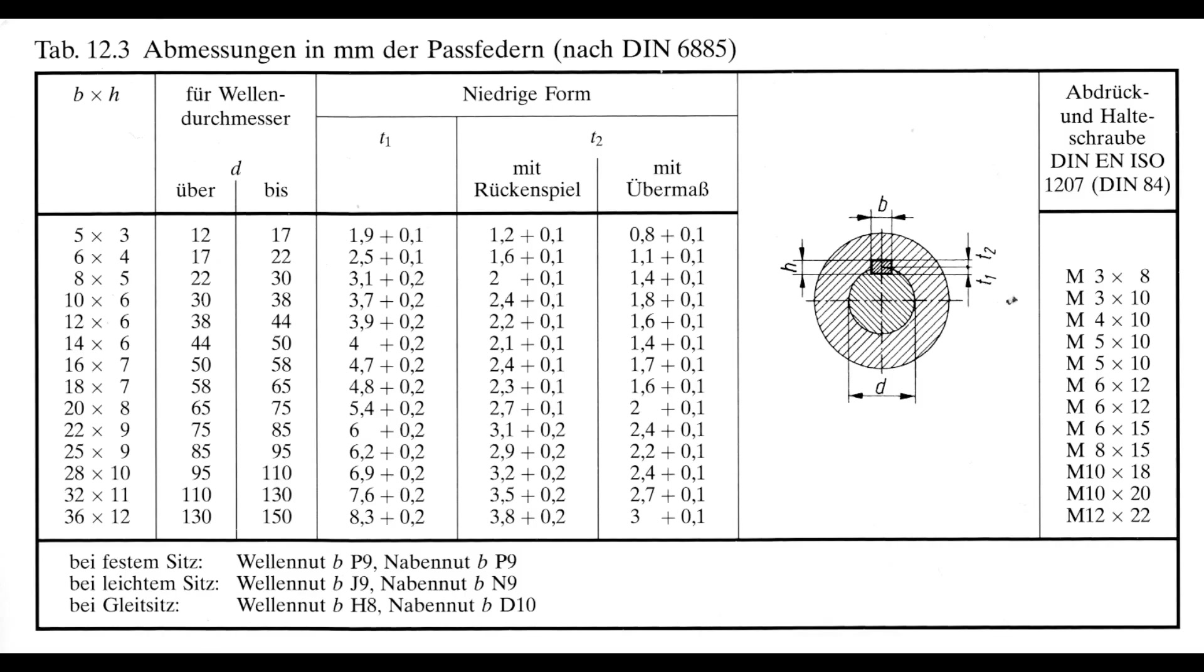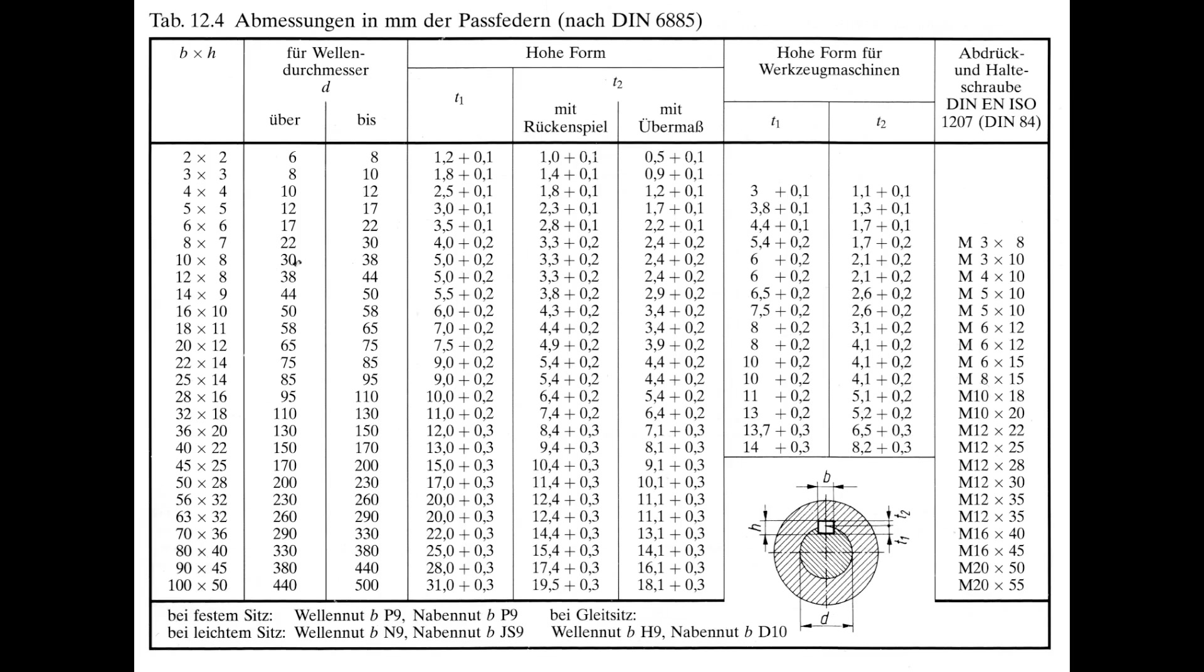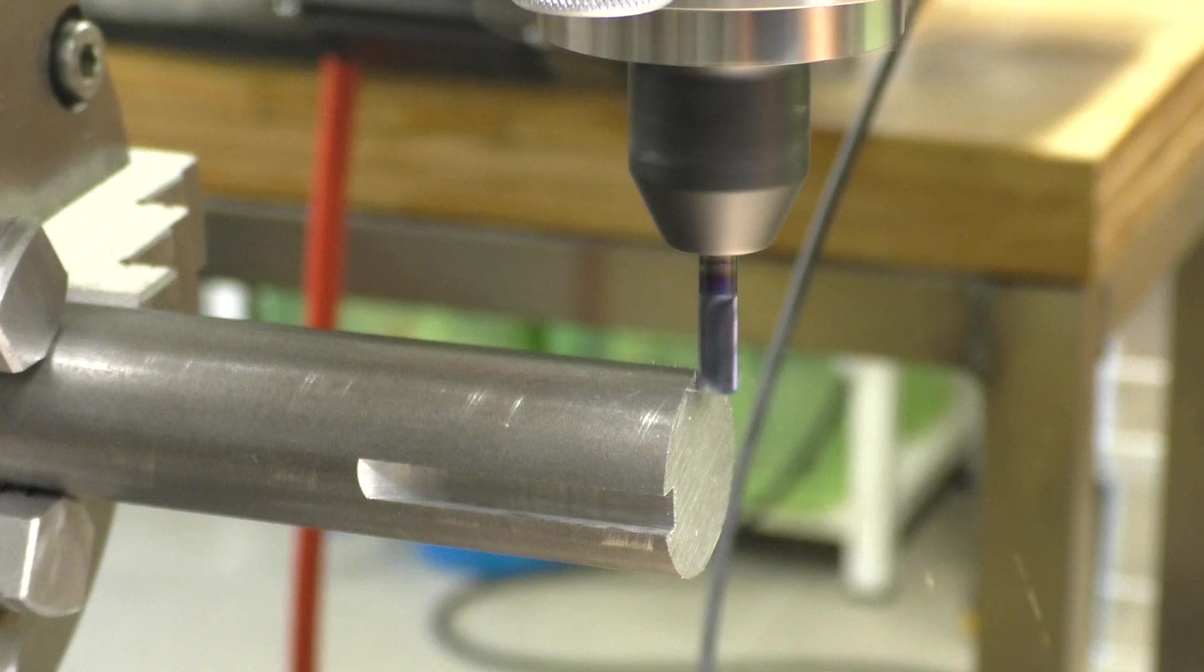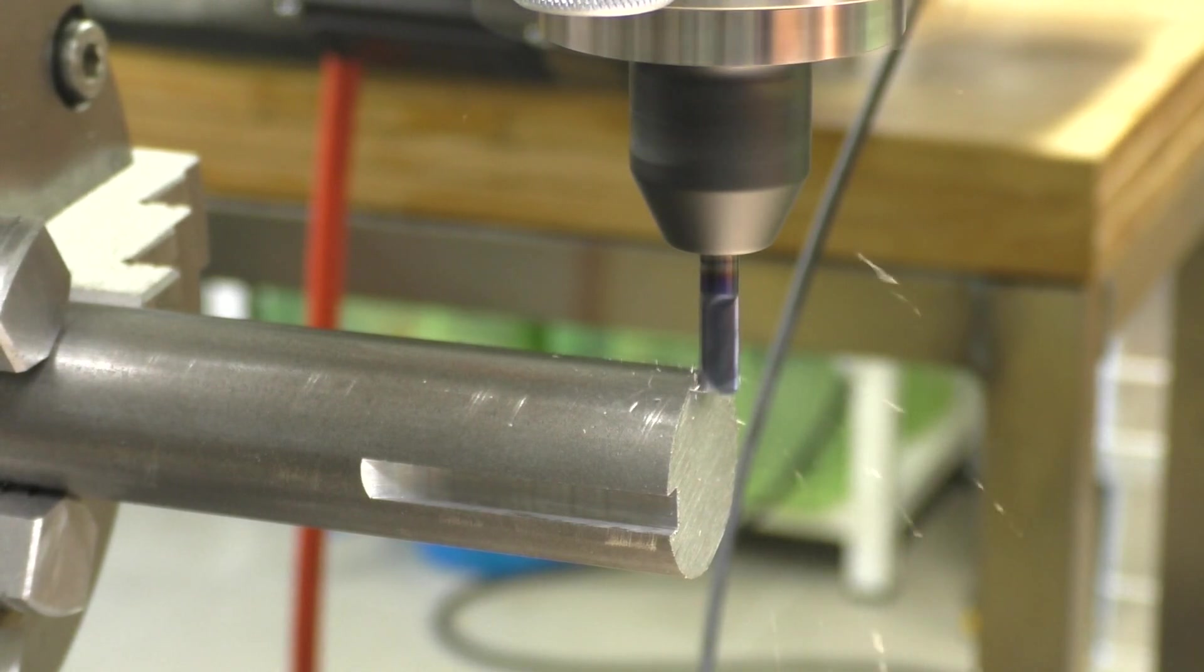Here are the metric standards for feather keys and Woodruff keys according to German standards. Then let's get started. This is a solid carbide cutter with a diameter of 6mm.